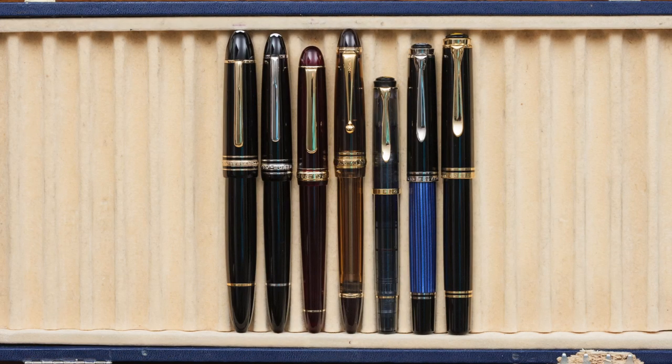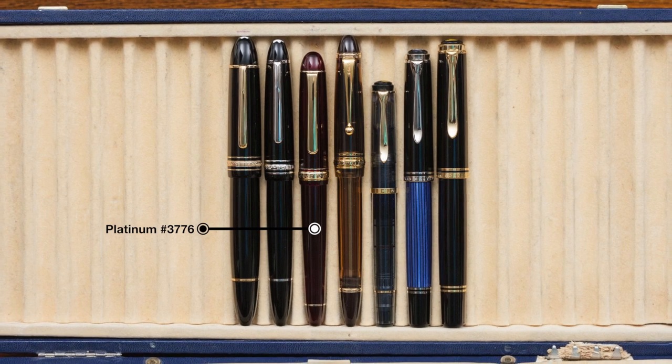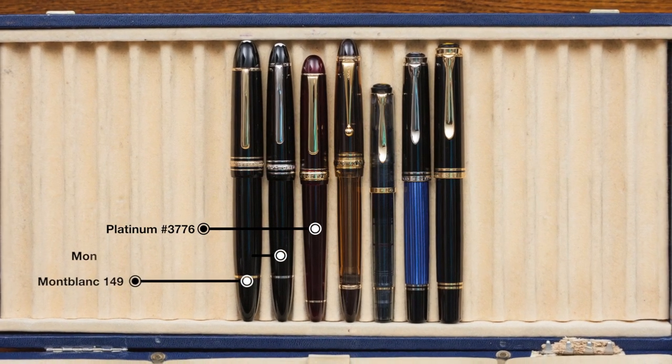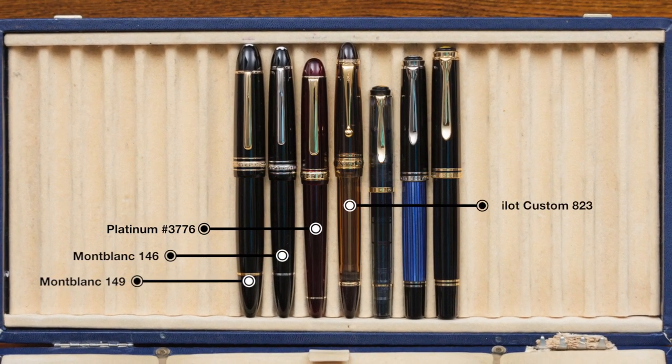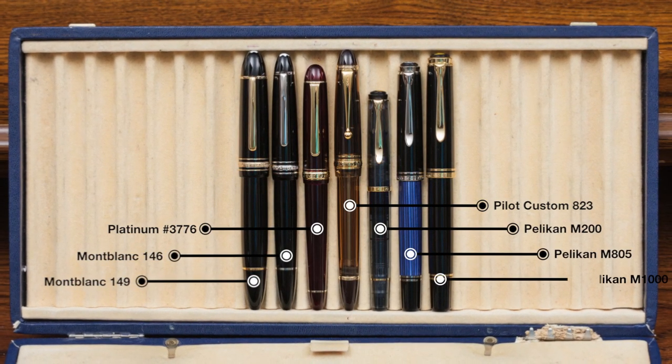The 3776 is a medium-sized pen that's a bit on the short side as seen here next to the Montblanc 149, the Montblanc 146, the Pilot Custom 823, the Pelican M200, M805, and M1000.